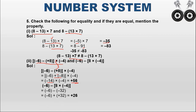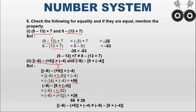For the second expression, minus 6 minus (8 into minus 4): inside the bracket, 8 into minus 4 — different signs, so minus 32. Then minus 6 minus (minus 32): two operators together, minus into minus becomes plus, so minus 6 plus 32. Different signs, subtract: 32 minus 6 equals 26. Since 32 is bigger and positive, the answer is plus 26. Therefore 56 is not equal to 26 — the two expressions are not equal.